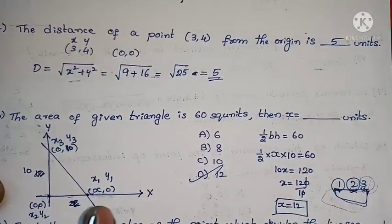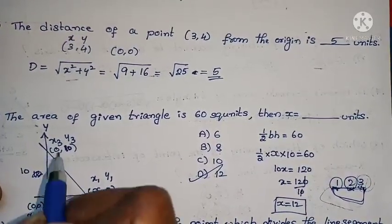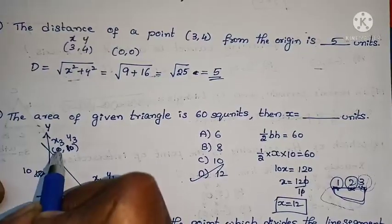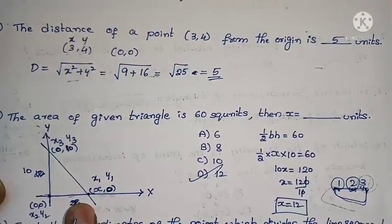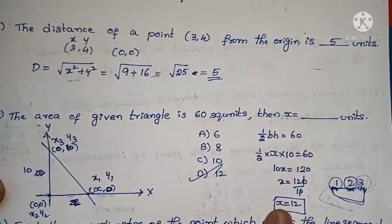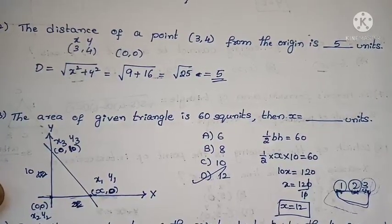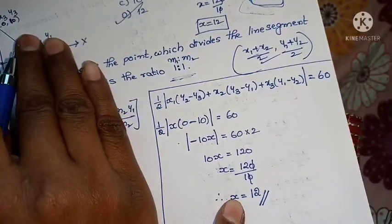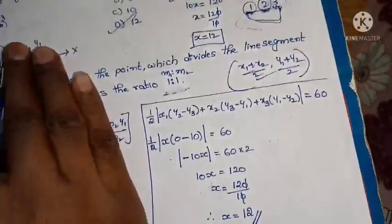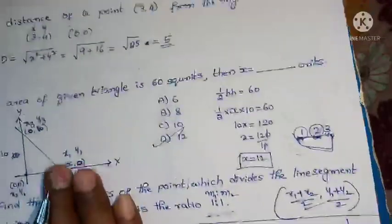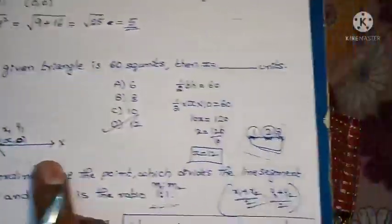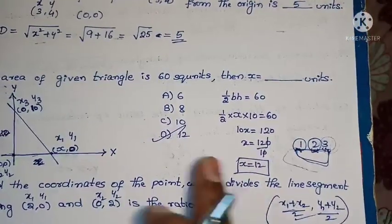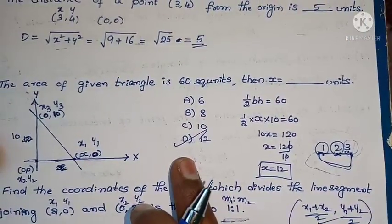Here's the shortcut. Y coordinate is 0 here, x coordinate is 0 here. This is the base. Whether you use that formula or this straightforward method, our answer is 12.